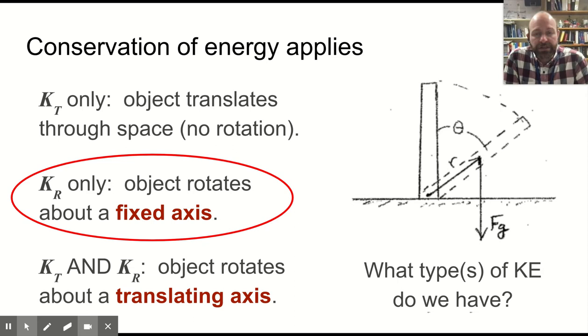We have no translational kinetic energy because the object doesn't move through space. We are not going to use both translational and rotational because the axis isn't moving while the thing is rotating. We're going to use just rotational because all of the motion can be described as rotating about an axis.